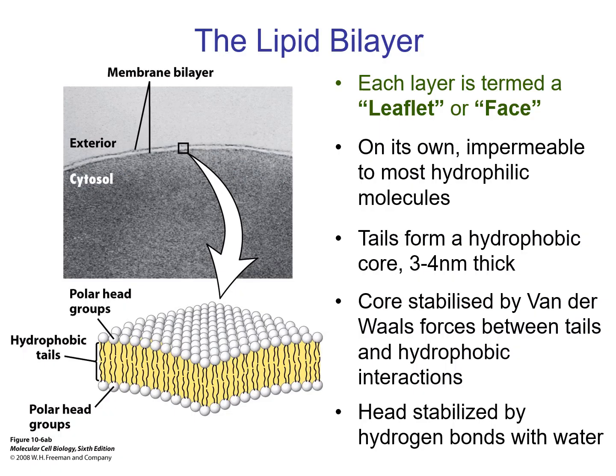What you're seeing here is an electron micrograph — a photo taken with the transmission electron microscope — of the plasma membrane at very high magnification. You can't actually see the membrane with a light microscope. If you're looking at cells in the lab, you will see a dark line on the outside of the cell, but you're actually seeing the much thicker layer of proteins that make up the extracellular matrix. This is an incredibly thin structure. We've got two layers, and each layer is referred to as a leaflet.